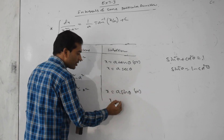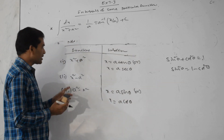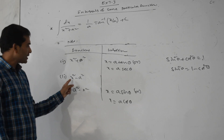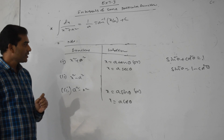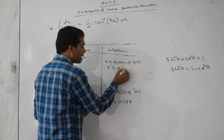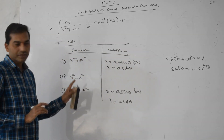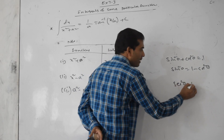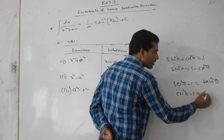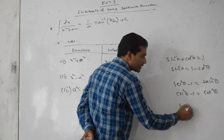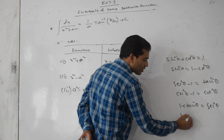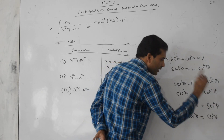For x² minus a², x equals a sec θ or a cot θ. Using identities: sec²θ minus 1 equals tan²θ; cosec²θ minus 1 equals cot²θ; 1 plus tan²θ equals sec²θ; 1 plus cot²θ equals cosec²θ. To check which substitution is right, identify whether the denominator function is sine, cos, tan — which is suitable.